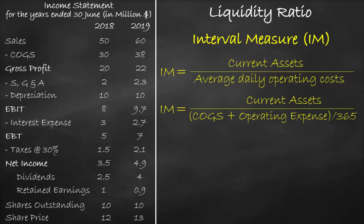Please note that the operating expense refers to the selling, general, and administration expenses. We get the current assets from the balance sheet and the cost of goods sold and operating expense from the income statement.